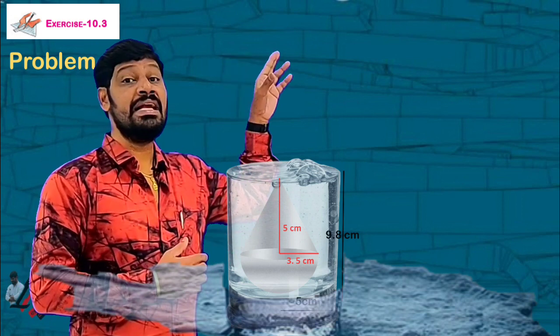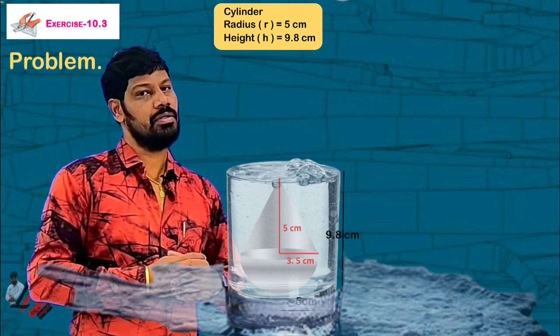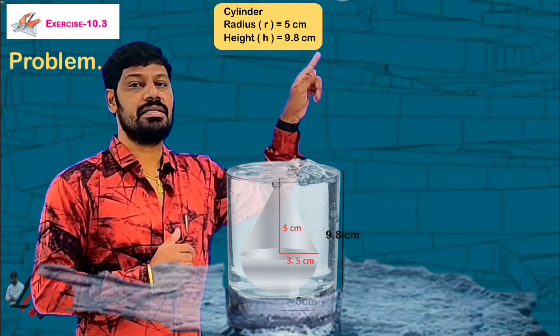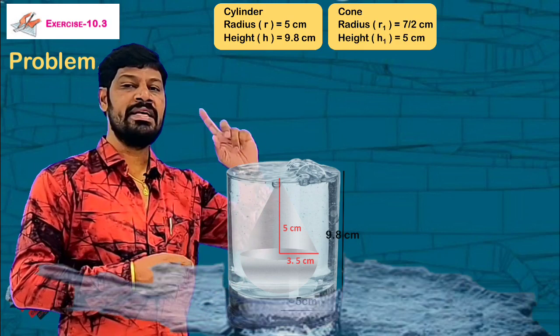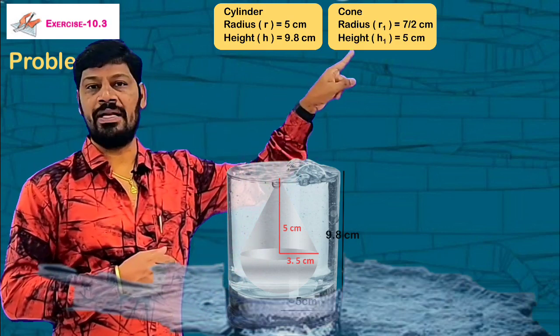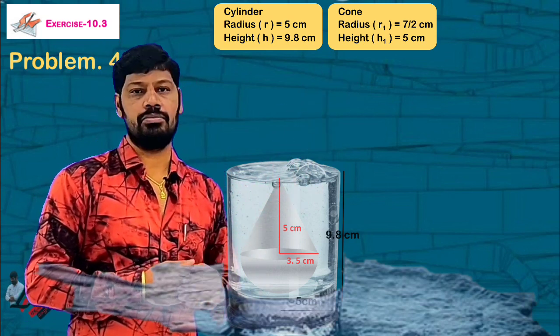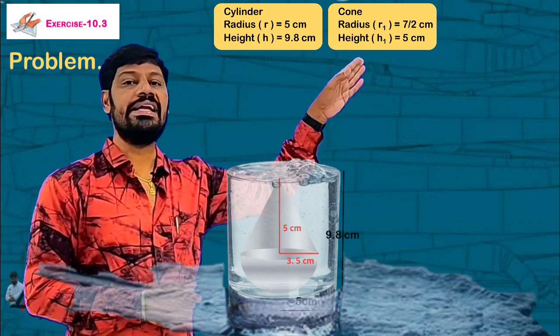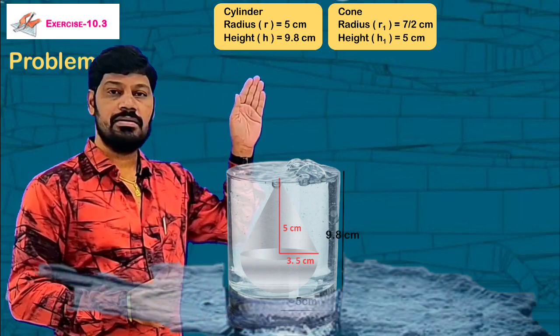Let me write down the values clearly. Cylinder radius is 5 centimeter, height is 9.8 centimeter. Cone radius, I'll use R1, is equal to 7 by 2. Cone height H1 is 5 centimeter. So R is 5, H is 9.8, R1 is 7 by 2, H1 is 5.